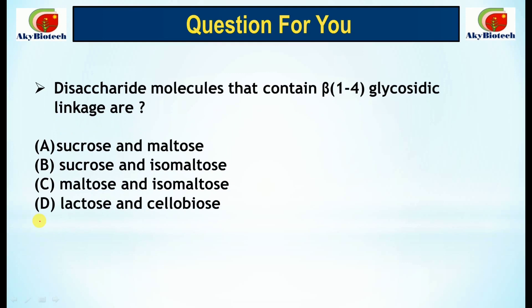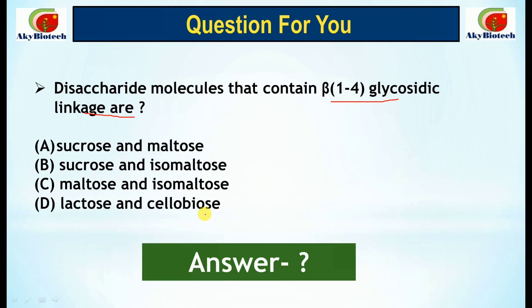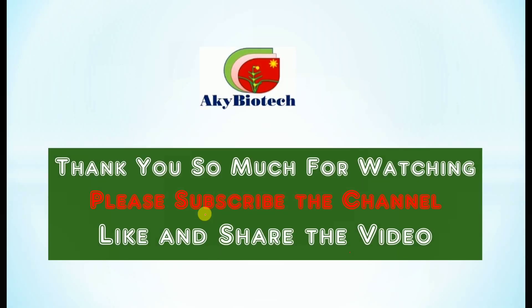Today's question for you: Disaccharide molecules that contain the beta-1,4 glycosidic linkage — which are they? Options are: sucrose and maltose; sucrose and isomaltose; maltose and isomaltose; or lactose and cellobiose. Kindly pick up the correct option and answer in the comment box. We will discuss this in the next video. Thank you for watching — please subscribe, like, and share. Hardly a few days are left for your competitive examination, ICNH.